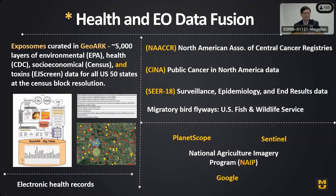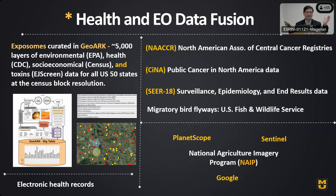For data, we have an exposome curated across multiple areas. One is EO images — we have PlanetScope, Sentinel, and NAIP, which is USDA's National Agriculture Imagery Program — as well as Google imagery. For GIS data, we have about 5,000 layers of curated data at the tract level for all 50 states of the United States, pulled together from many public domain sources.